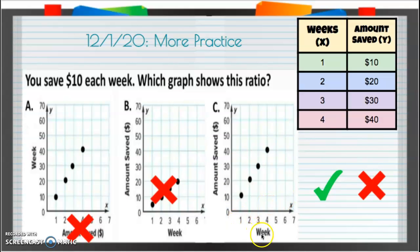This one, weeks, yes on the bottom on our X axis, perfect. And our Y axis should be our amount saved, up and down. Amount saved, yes, yes, yes. So C is our correct answer. And that's it, that's all you have to do for the more practice. Great job!